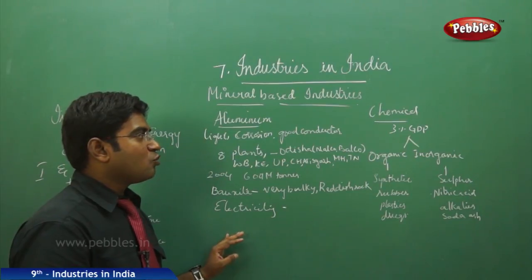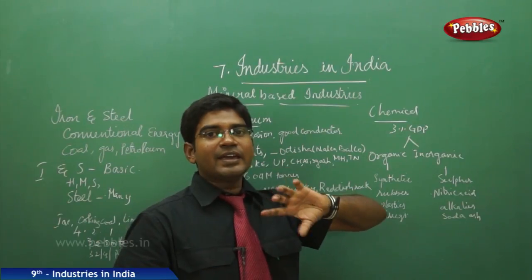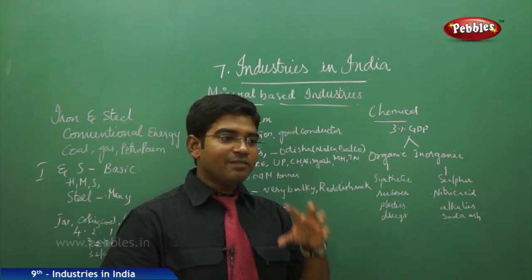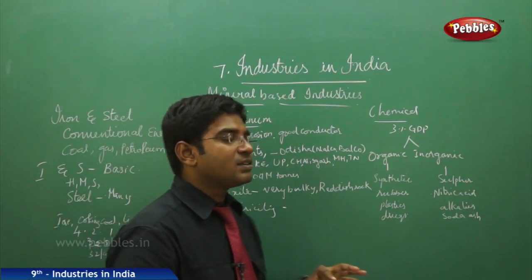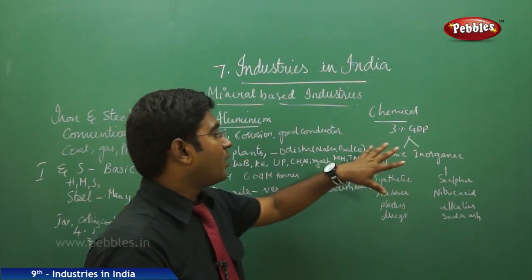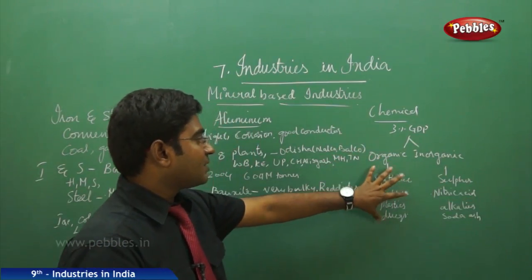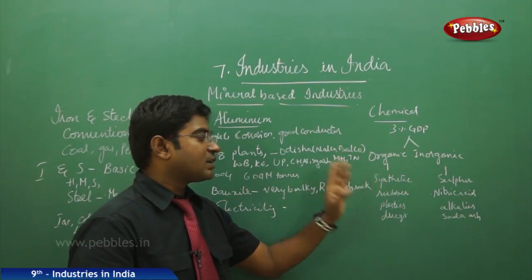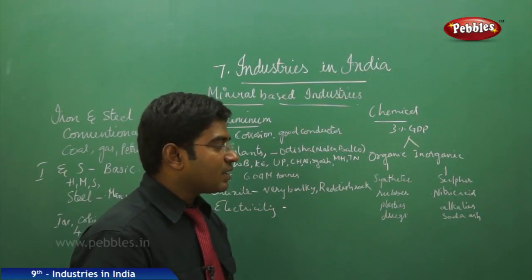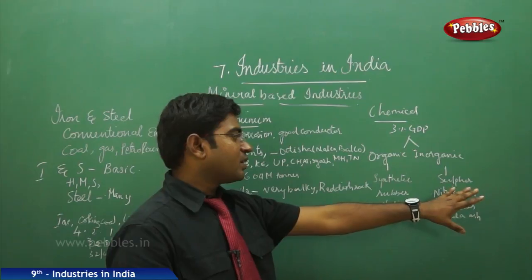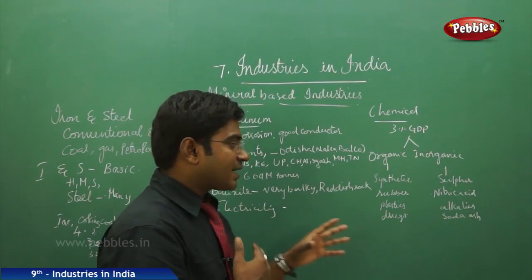Moving on to the chemical industries, they contribute three percent of India's entire GDP, and India has a growing chemical industry sector. Chemical industries are categorized into organic chemicals and inorganic chemicals. Organic chemicals include synthetic rubber, plastic, and drugs. Inorganic chemical industries include sulfur, nitric acid, alkalis, and soda ash.